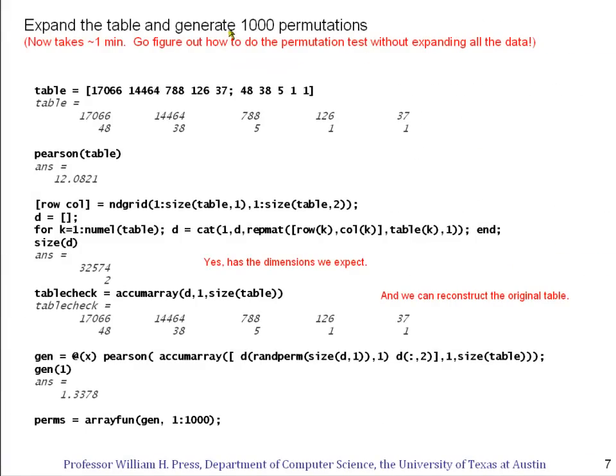Just as before, we're going to expand the table and generate 1,000 permutations. Here are only 1,000 permutations because when we expand the table, we get something with more than 30,000 rows because of these large numbers of counts. And I didn't want to take more than a minute computing it just on my laptop, so that limited me to 1,000 permutations. Here's a good exercise for you. You don't really have to expand the table into these long, long vectors. You can conceptually do that and then figure out how to do the permutation test without expanding all the data actually. So why don't you go off and do that after you listen to this segment, figure out how to do that. But we'll just do it the long way.